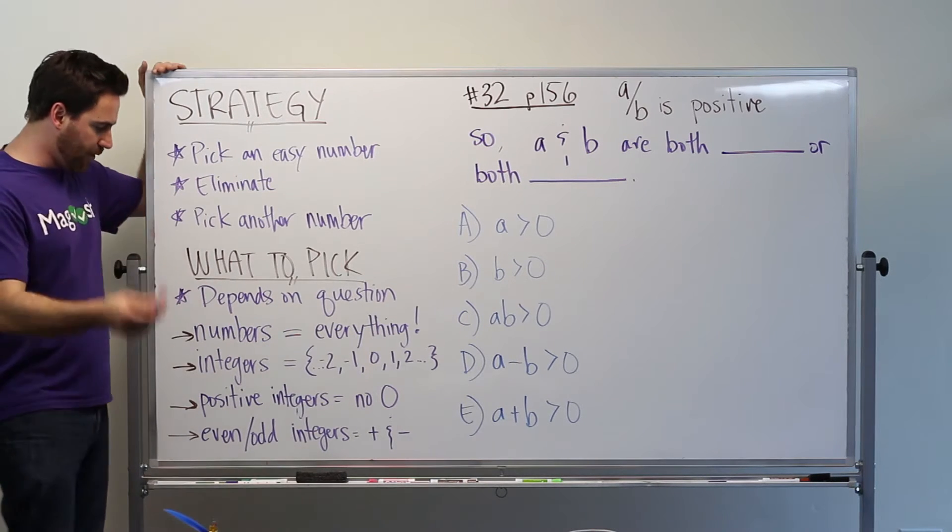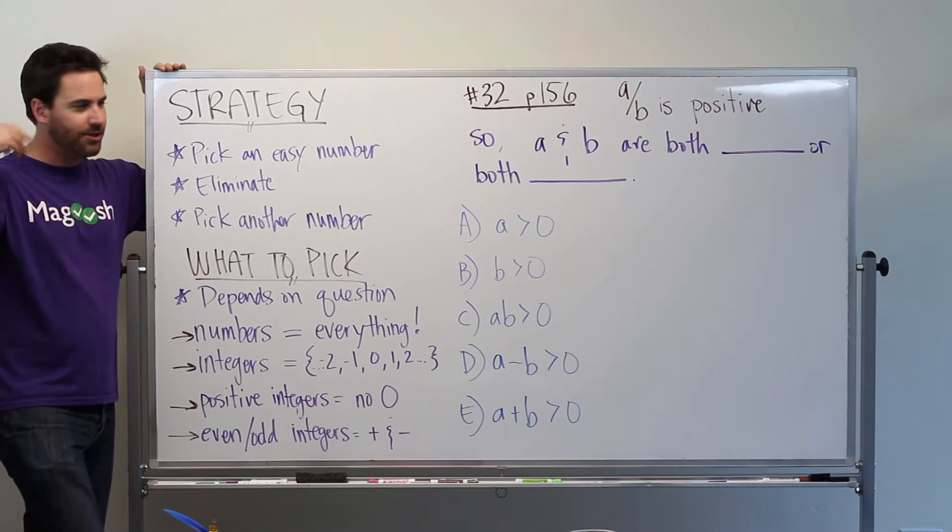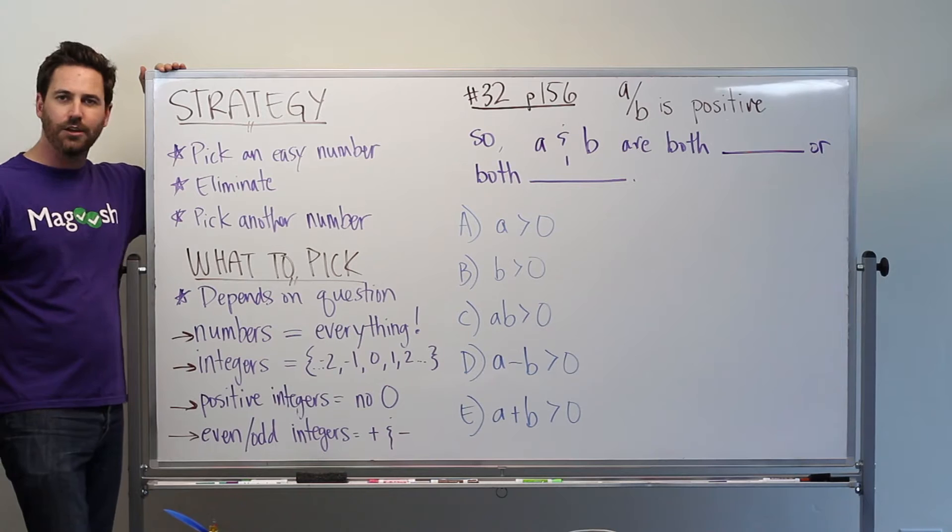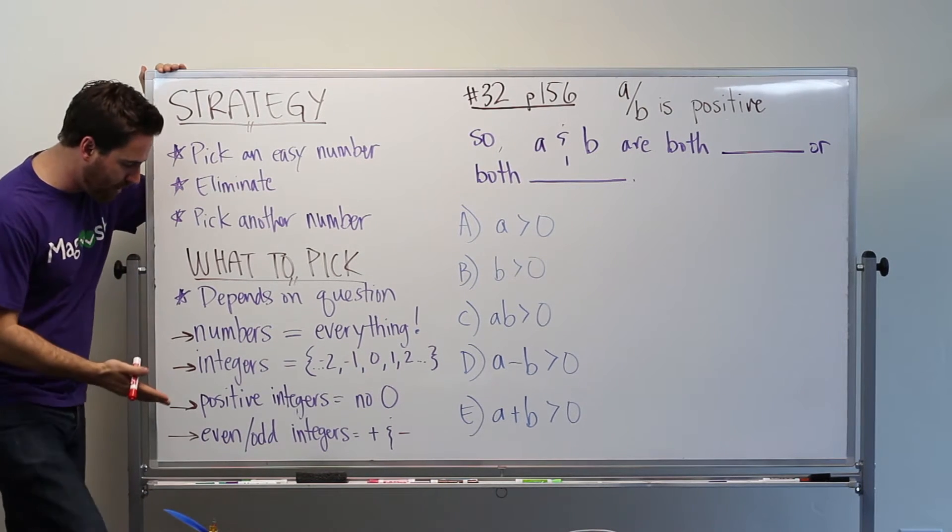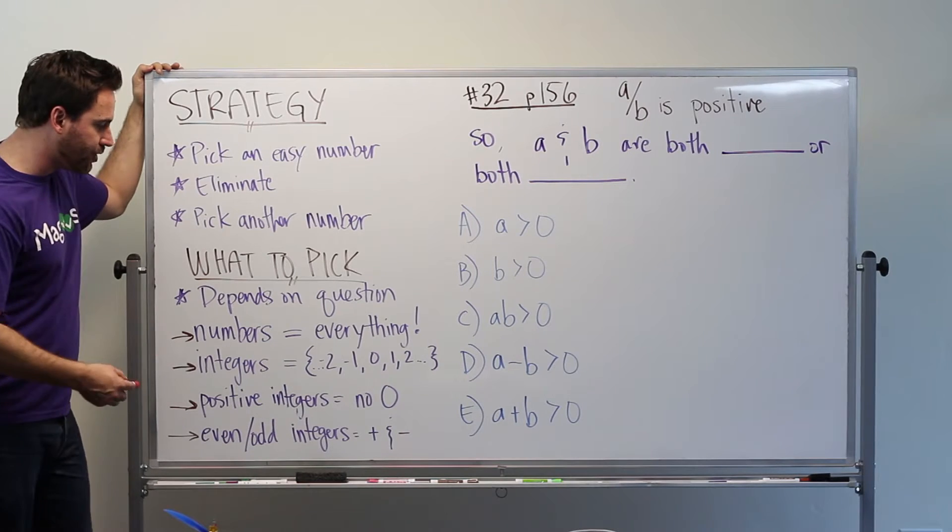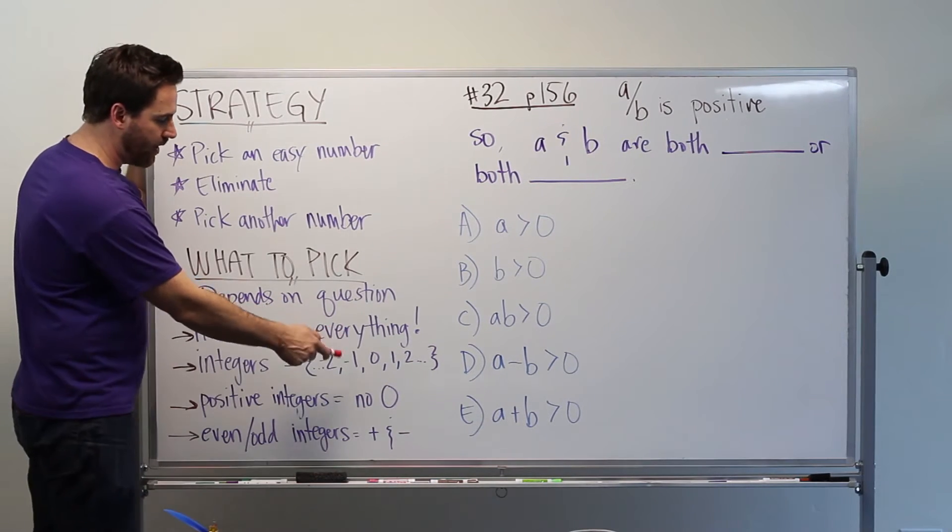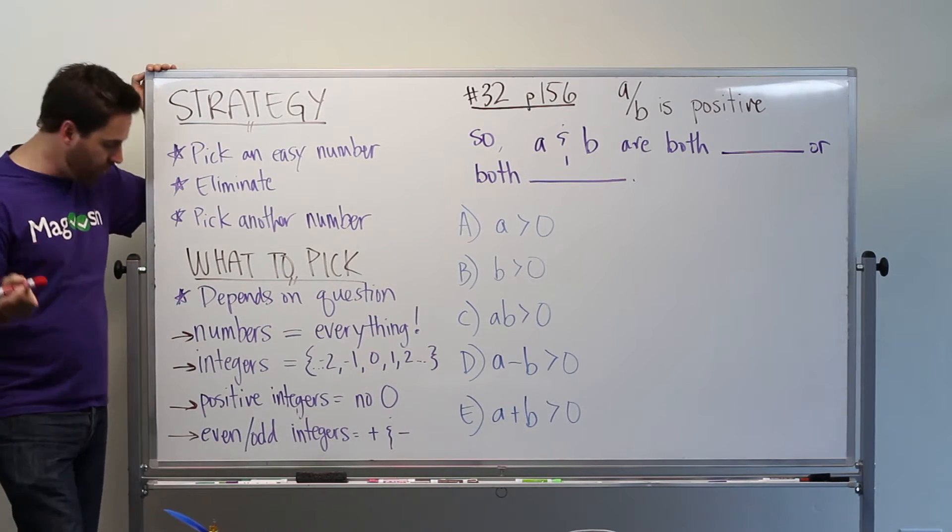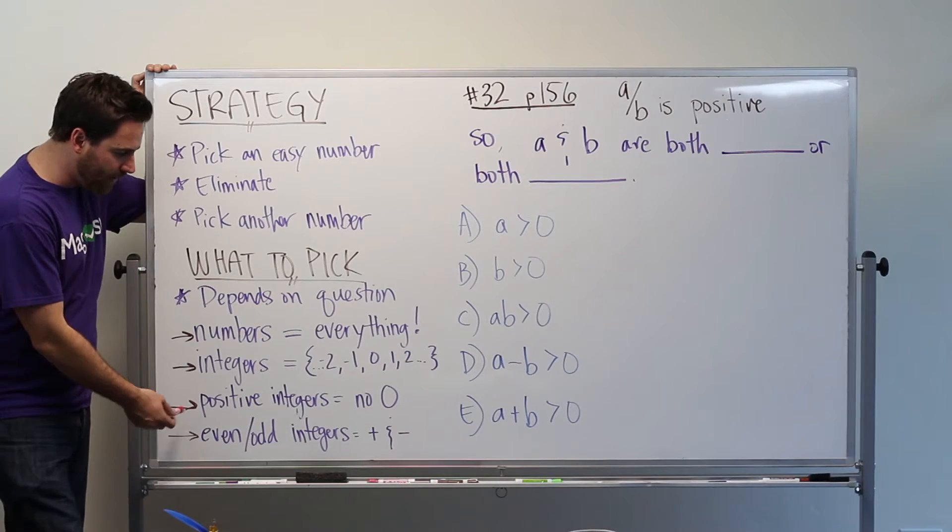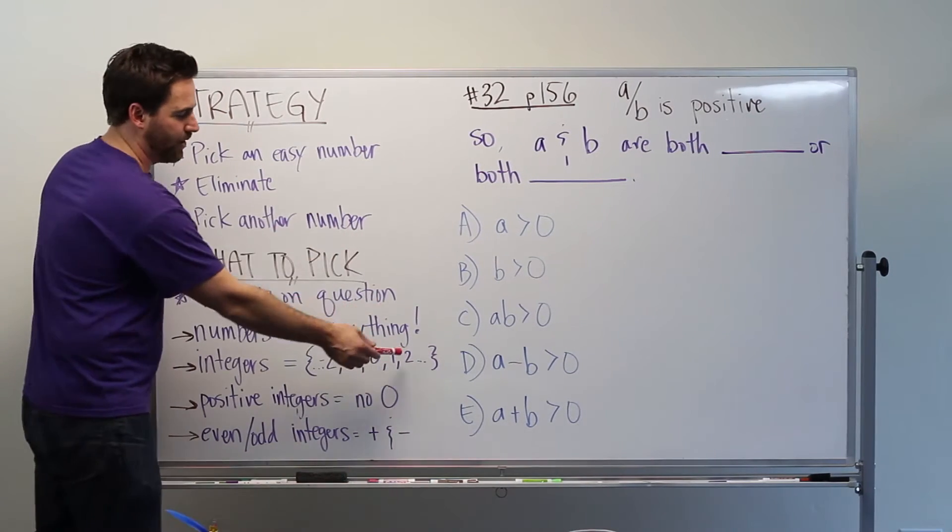So just as a review, numbers, that's going to refer to everything under the sun. So zero, one, negative one, one-half, .478, all of those are numbers. Integers refer to counting numbers or whole numbers. That also includes zero and negative. So negative two, negative one, zero, one, two. Positive integers is everything above zero. Don't count zero. So one, two, three, four, five.